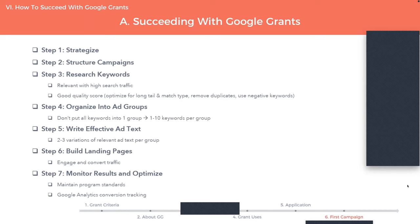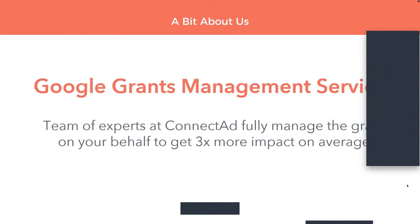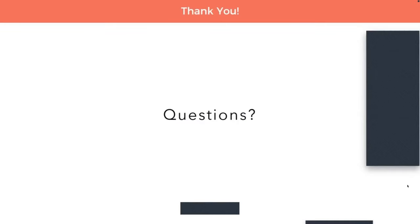Those are basically the seven steps on how you would go about creating your campaign. If you follow through from top to bottom, that is definitely where you want to start. If you don't know how to do it, don't want to do it, or don't have time to do it, this is something that we can help you with. We're going to leave the last 13 minutes for questions, so I'll hand it back to TechSoup and see what questions you might have for us.